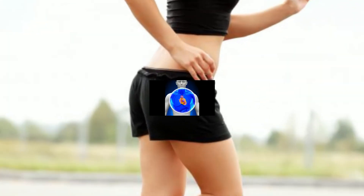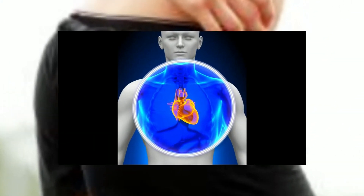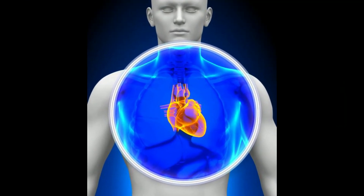Therefore, in order to increase ejection fraction, the focus should be on improving the quantity of blood moved out of the ventricles. The best way to do this is to increase the size of the ventricles and the contractility, or force with which they contract.